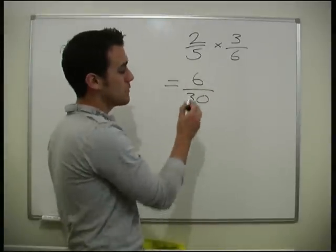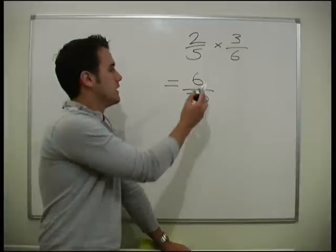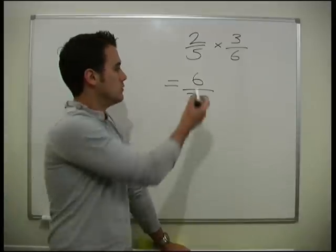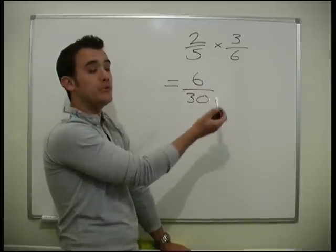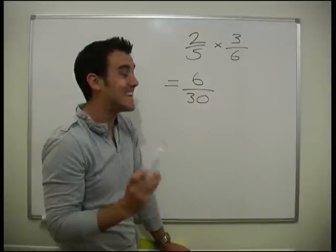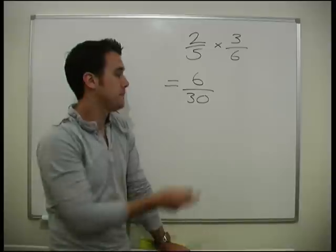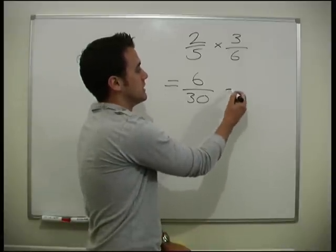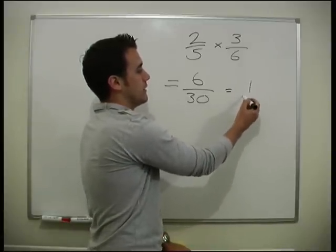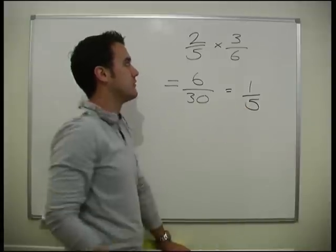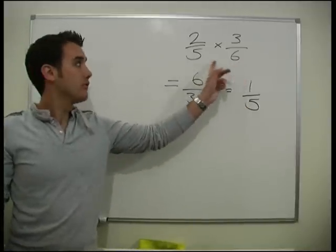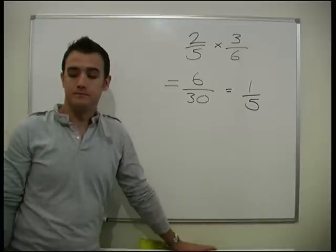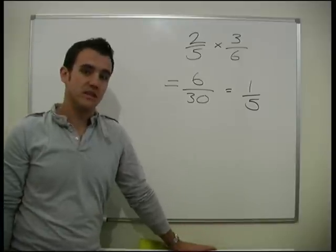Does that cancel down? Now, can we make that any simpler? How many times does 6 go into 30? Well, is there any numbers that will go into both 6 and 30? Yes, there is. 6 will go into 6 and 6 will go into 30. So we can simplify. 6 will go into 6 once. 6 will go into 30, 5 times. So 3 sixths times 2 fifths gives us 1 fifth. It's that straightforward.